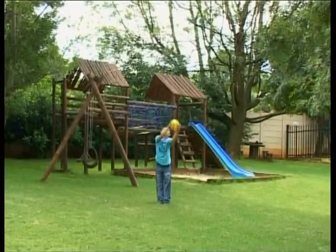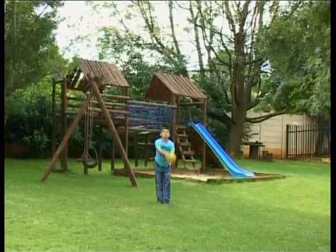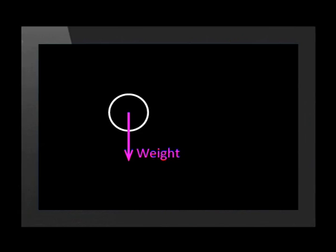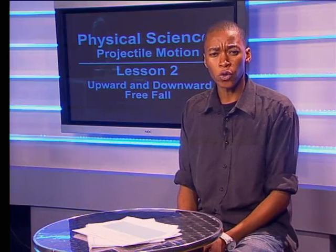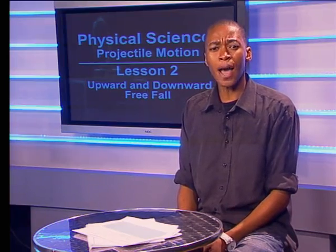Now it turns around and moves downward, getting faster and faster — in other words its velocity increases as it falls downward. When it gets back to the same height it was thrown from, it has the same magnitude of velocity and the same amount of momentum it had when it had just left the thrower's hand. For the whole time the ball was in the air it was in free fall. So an object can move upward or downward in free fall; while it moves upward it slows, and while it moves downward it gets faster.